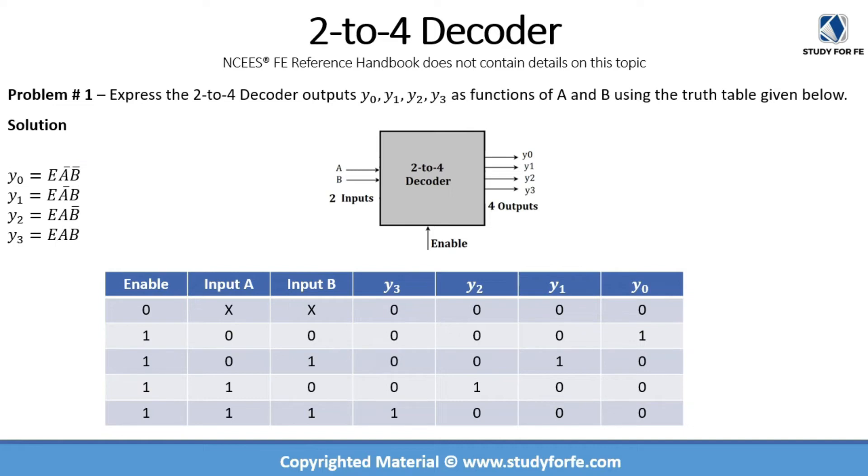So whenever you have a value of 1, you can use that input as is. And whenever the value of the input is 0, you will have to use a bar or a hat or b bar or b hat. Similarly, we can go about expressing y1, y2, y3 in the form of e, a, and b. So y1 is equal to 1 when enable is 1, so you have e appearing, when a is equal to 0, so we will use a hat or a bar, and b is equal to 1, so we can use b as is. And similarly, you can take a look at y2 and y3. So what we've done in this case is we basically expressed all of these output values as functions of enable and the input values a and b.